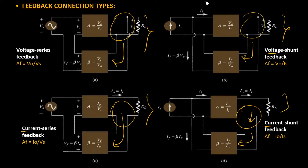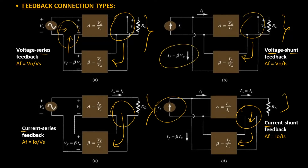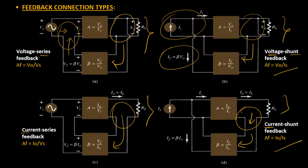The second term you will notice in all four connection types is series or shunt. If it is series, that means it refers to the connections on the input side — how your feedback voltage is being connected to the input voltage, with both in series. For a shunt connection, the feedback current is connected in parallel with the input current, and that holds good for both voltage shunt and current shunt feedback networks.